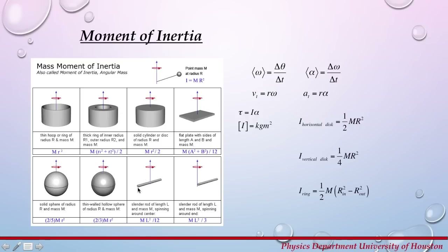For this example, the axis of rotation is at the center of this rod, and for this example the axis of rotation is at one end of the rod. Consequently, the moments of inertia have different equations. For the one where the axis of rotation is at the center, the moment of inertia is the mass of the rod times length squared divided by 12. For the rod whose axis of rotation is at one end, the moment of inertia is m l squared divided by 3.